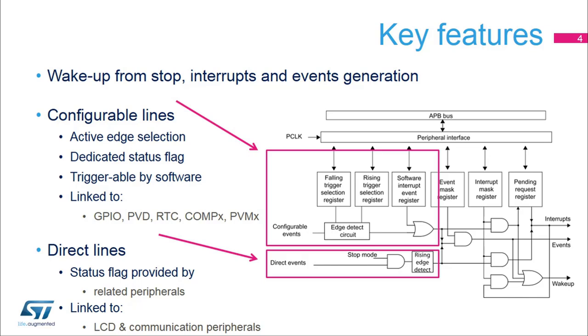Configurable Lines allow the user to select which active edge generates interrupts or events, with a dedicated status flag for each line. Requests on Configurable Lines can also be generated by software.